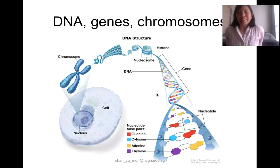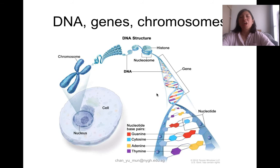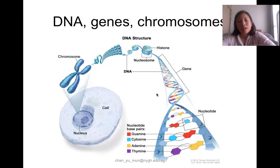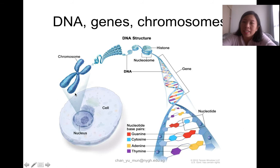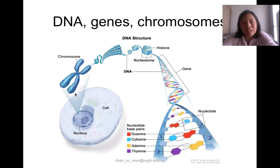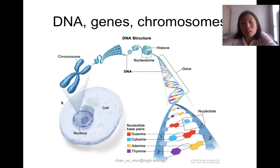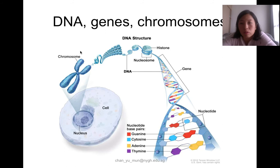Now for the part students often find difficult, but which is actually very easy to understand: the relationship between DNA, genes, and chromosomes. Chromosomes are found inside the nucleus of almost all cells — red blood cells have no nucleus. But what exactly is a chromosome made up of? A chromosome is made up of only two main chemicals. Let's watch a video to understand this.